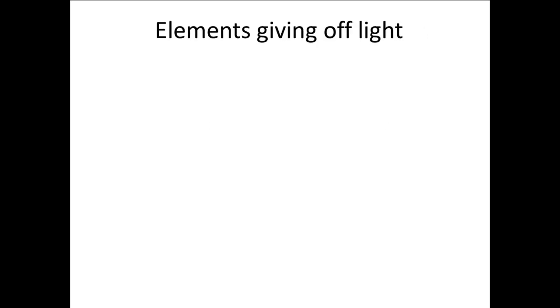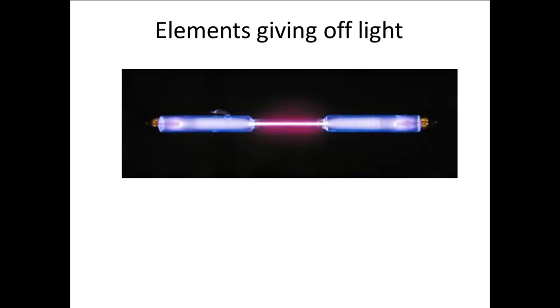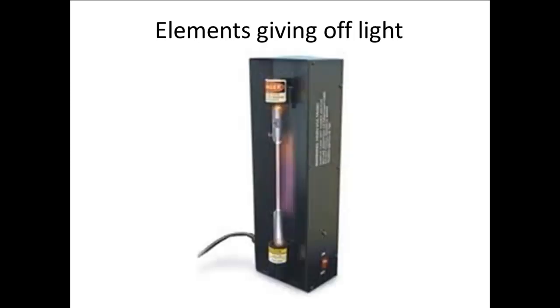When we place a gaseous element in a tube and run an electric current through the gas, light is given off. The typical arrangement has the tube attached to a power supply which provides a high voltage current of electricity that breaks the substance into separate atoms that then give off light.